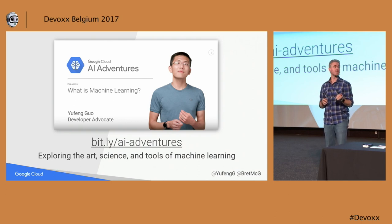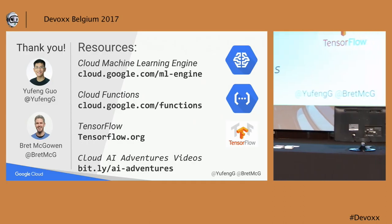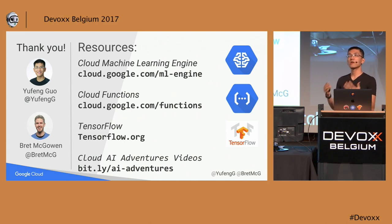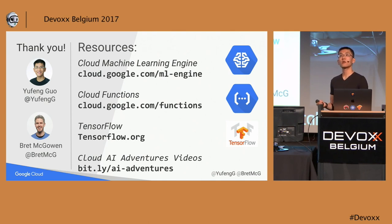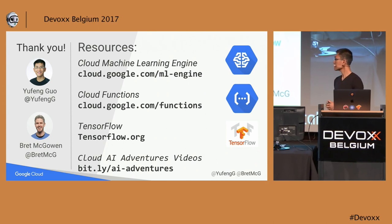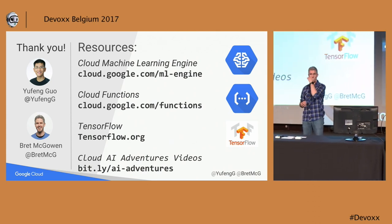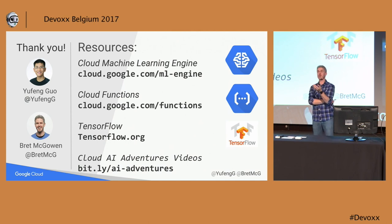Other resources we can point you toward: the Machine Learning Engine website, tensorflow.org, and the Cloud Functions website. If you have questions you want to ask us but don't get a chance to find us at the conference, the easiest way is to hit us up on Twitter — at YufangG and at BrettMCG. We haven't actually put our code on GitHub yet — once we get it cleaned up and ready, we'll open source it. The easiest way to find out is follow us on Twitter and we'll make an announcement. Thank you very much.